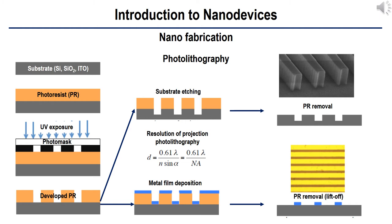The resolution is proportional to the light source wavelength. After UV exposure, the exposed area suffers a property transition — either from fully solvable to non-solvable, or for some photoresists, from non-solvable to solvable in a certain solvent. The patterned PR film on the substrate can be used for further processes such as substrate etching or metal film deposition. The etched substrate can be further processed to remove the patterned PR layer. The metal film deposited sample can be further processed using a lift-off process, in which the PR layer is removed.